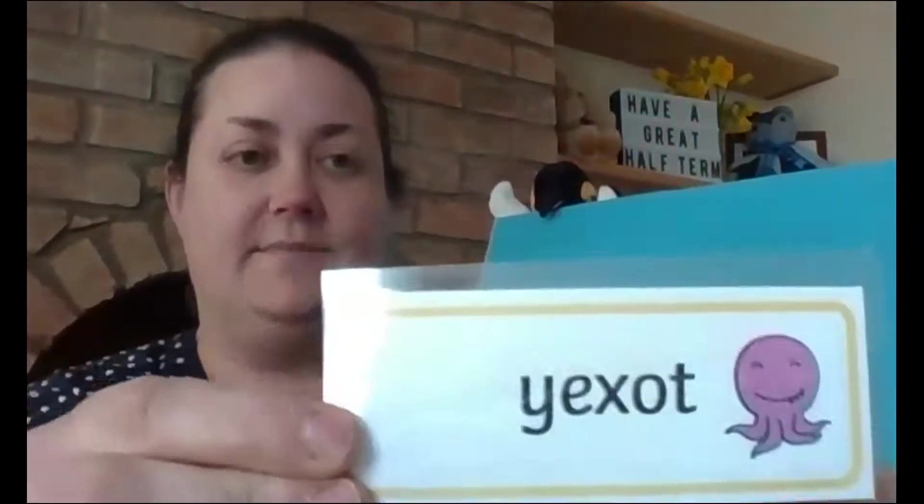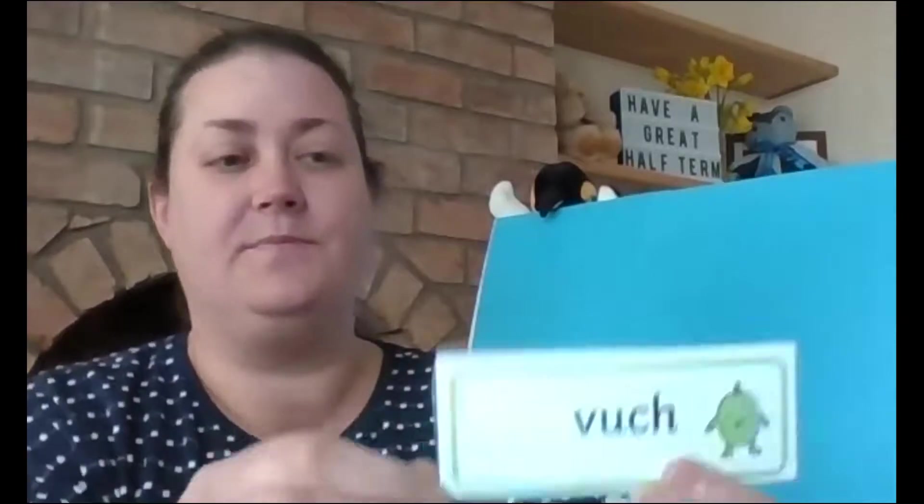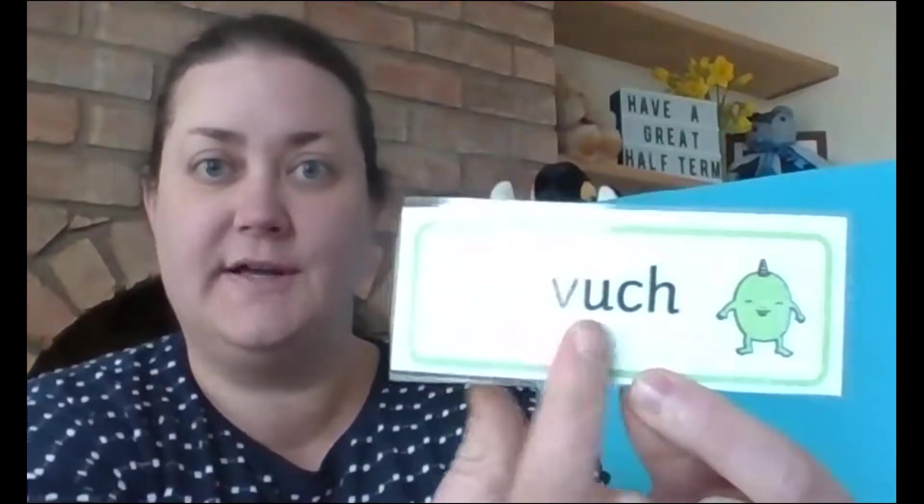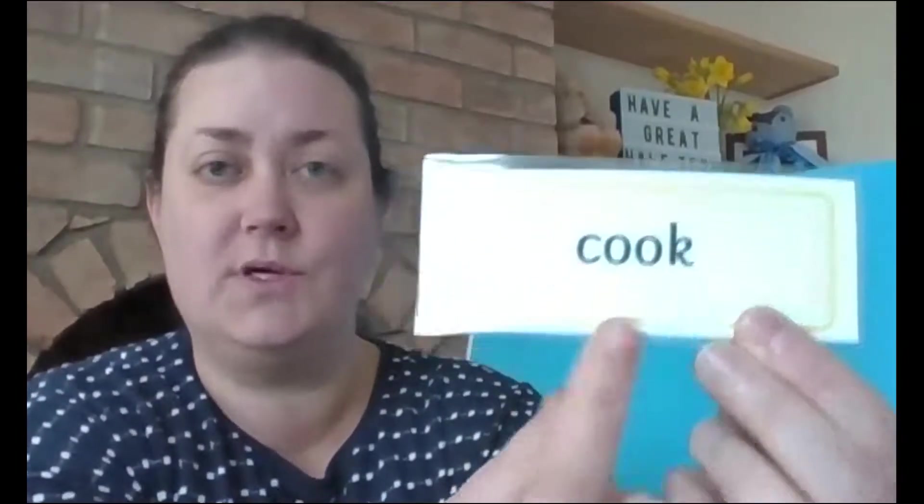So what we're going to do, just very quickly, is do our real and alien words. Off we go, sound it out for me. Uxot. What do we think? Yeah, that one's made up. Let's try this one. Vuch. Made up word. Let's try this one. Is this one cuccuc? Good, it's that one. And that's a real word. How about this one? Hob. Yeah, that one's made up. This one. Join. Good, that one's a real one. And our last one. Feel. Good. Well done. It's important that we keep using those phonic skills with our reading.